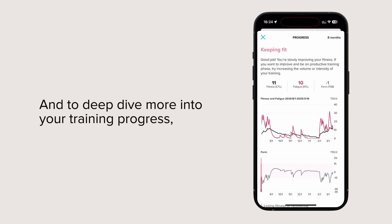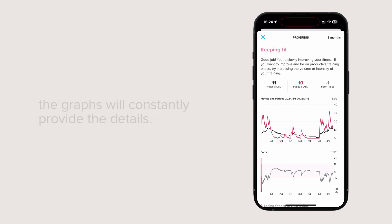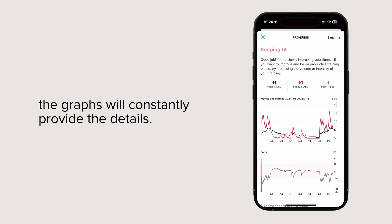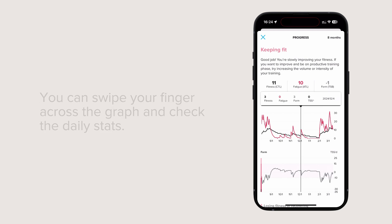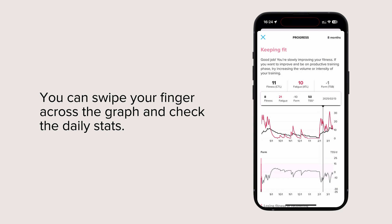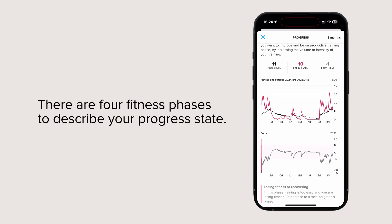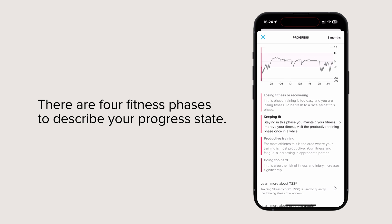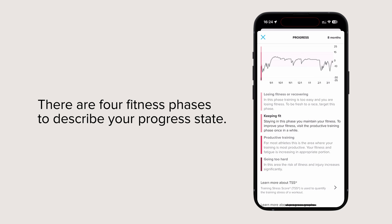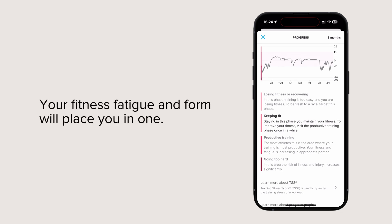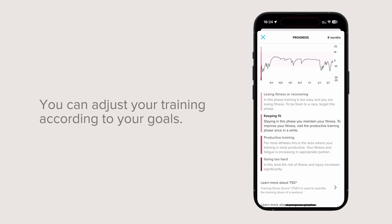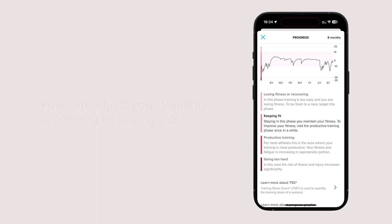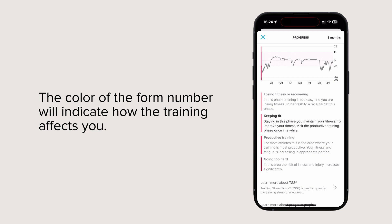To deep dive more into your training progress, the graphs will constantly provide the details. You can swipe your finger across the graph and check the daily stats. There are four fitness phases to describe your progress state. Your fitness, fatigue, and form will place you in one. You can adjust your training according to your goals. The color of the form number will indicate how the training affects you.